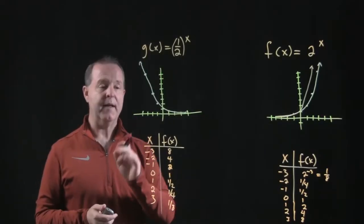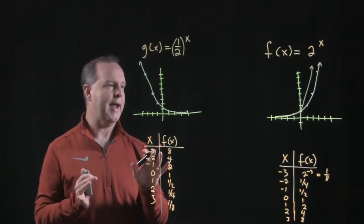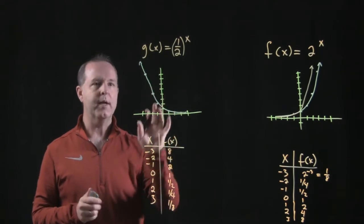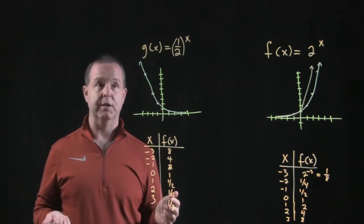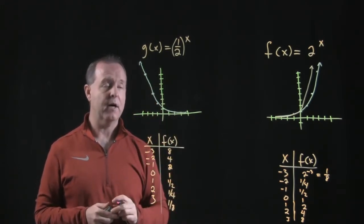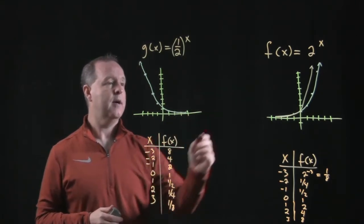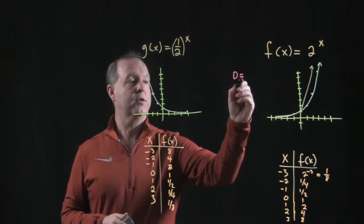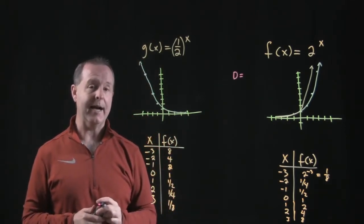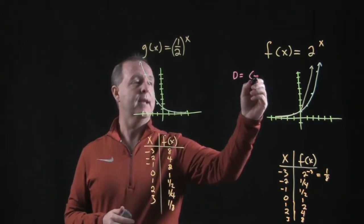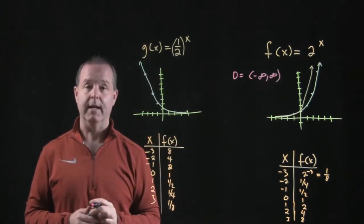And I guess maybe one other thing I should say too, just to really hammer home with you guys, is what does the domain and range of these functions have as well? Exponential functions have a domain and a range. So my f of x function over there, I would say its domain, which represents all the possible x values, are from negative infinity to positive infinity.